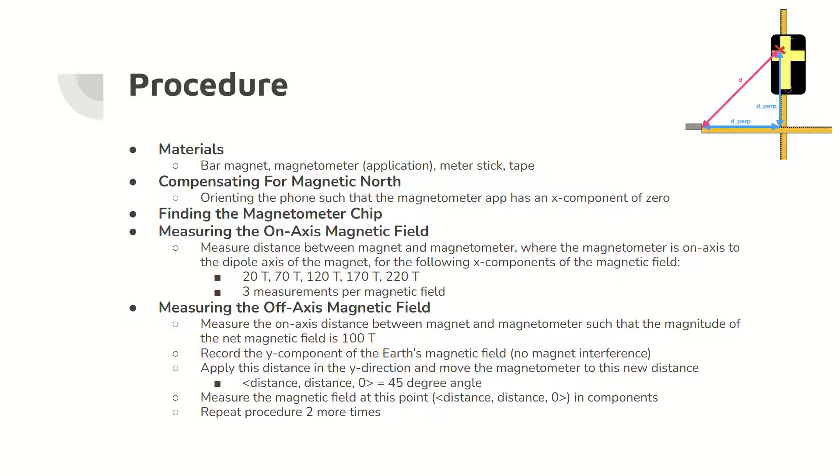Here's the procedure for the lab. The materials include a bar magnet and magnetometer. Each bolded section after the material section contains a series of steps that were conducted to calibrate the magnetometer for measurement, find the magnetometer chip in the phone, and collect data on magnetic fields at different distances, including the on-axis and off-axis measurements.